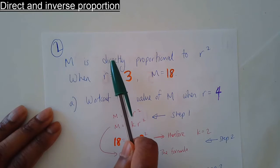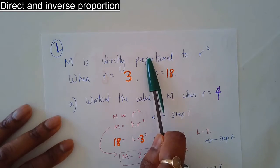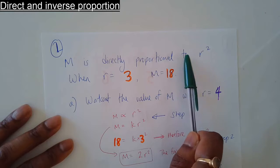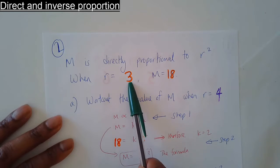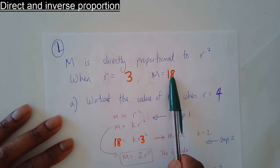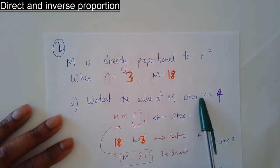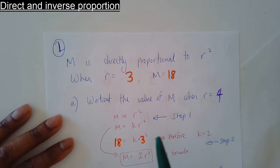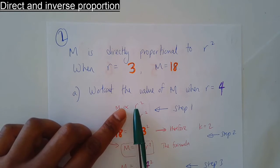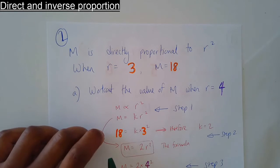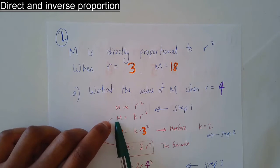m is directly — not inversely, directly — proportional to r squared. Here's the information: when r is equal to 3, m is equal to 18. The question: find the value of m when r equals 4. Step 1: m is directly proportional to r squared, so introduce k and the equal symbol.